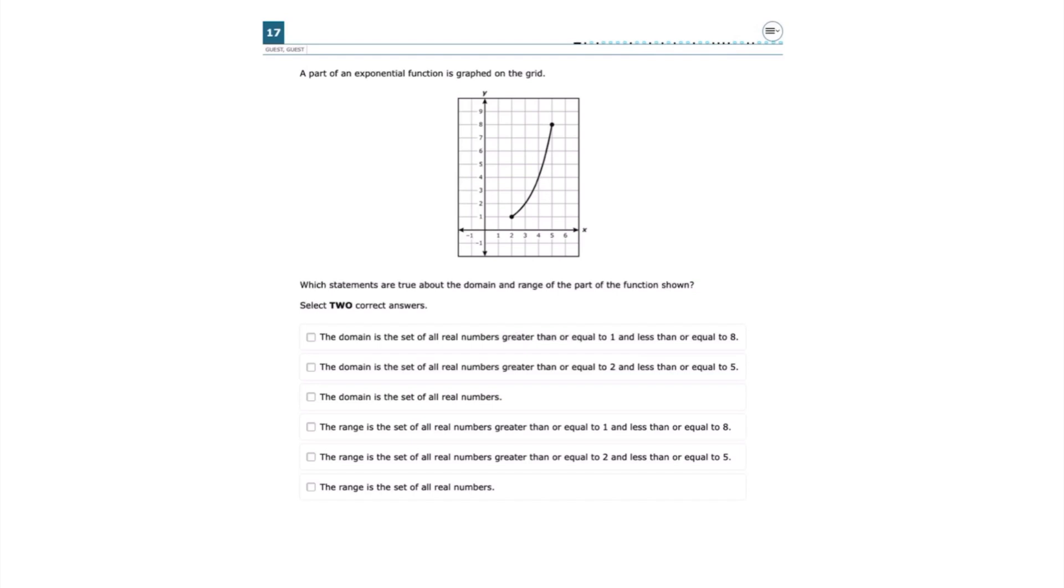This is number 17 from the 2024 Algebra 1 EOC. A part of an exponential function is graphed on the grid. Which statements are true about the domain and range of the part of the function shown?